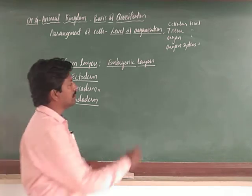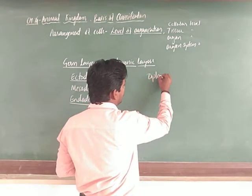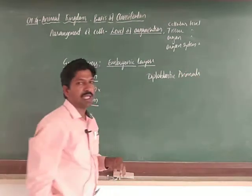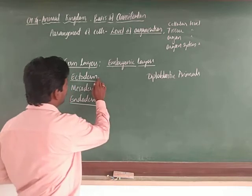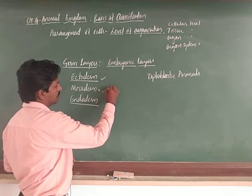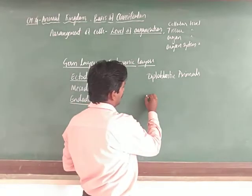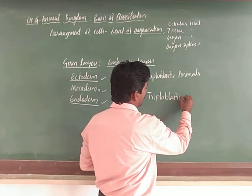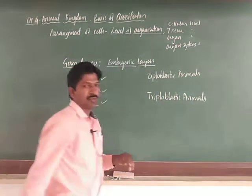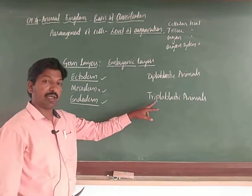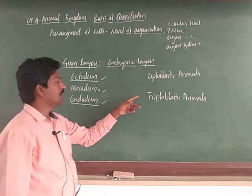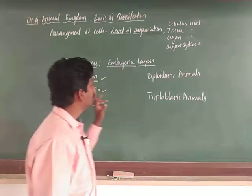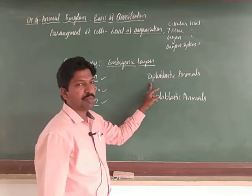Animals with only two germ layers, where mesoderm is absent, are called diploblastic animals. If an animal possesses all three layers in its embryonic stage — ectoderm, mesoderm, and endoderm — it is called a triploblastic animal. Animals showing only two layers are diploblastic; those showing all three layers are triploblastic.